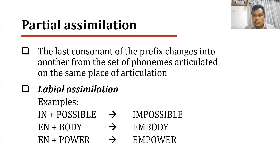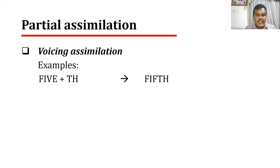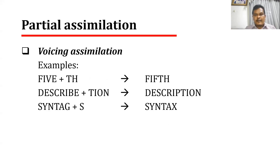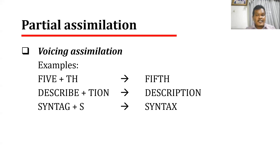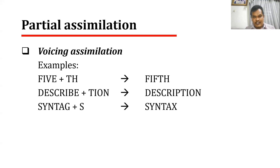The next type of partial assimilation is voicing assimilation. In labial assimilation we say 'prefer labials before labials', and in voicing assimilation we say 'prefer voiceless before voiceless'. This implies that the sound which is not voiceless is changed into a voiceless sound.